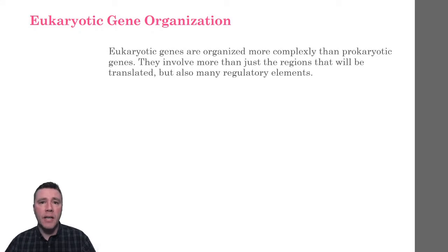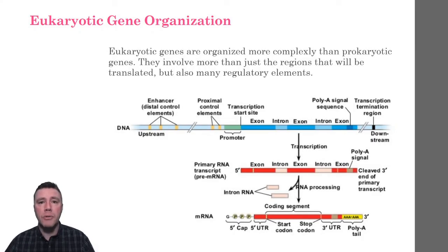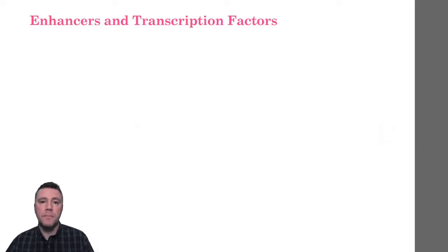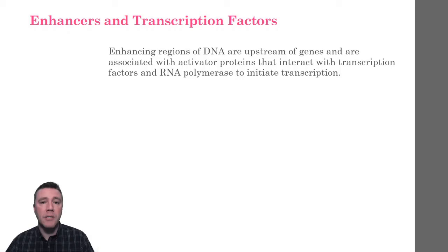Eukaryotic genes and the regions of DNA that control them are arranged as this typical model shows. Associated with most eukaryotic genes are control elements, which are segments of non-coding DNA that are important in regulating transcription. Each eukaryotic gene has a promoter, a sequence where RNA polymerase binds and begins transcription. Control elements can be just upstream of the coding region — the proximal control elements — or can be much farther upstream and are called enhancers. Enhancers may be thousands of nucleotides away from the coding region. Although a particular gene may have multiple enhancer elements, they are generally associated with only that gene.